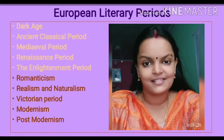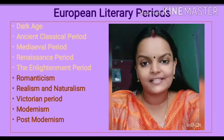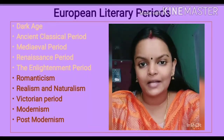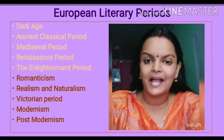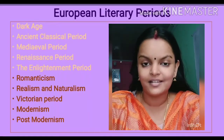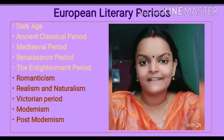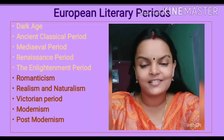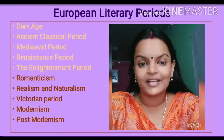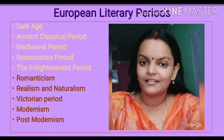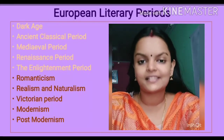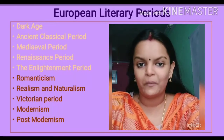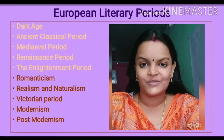This is the fourth lecture of the series. In our previous classes we were discussing the historical and literary background of European literature, and we have already covered dark ages, ancient classical period, middle ages, then renaissance period and also the enlightenment period. In this class we are discussing the literary features of the Romantic period. So let's begin.